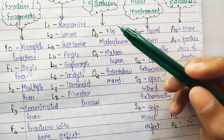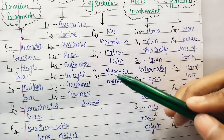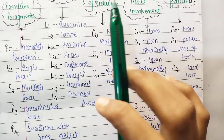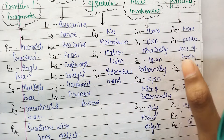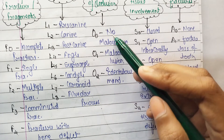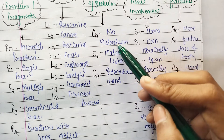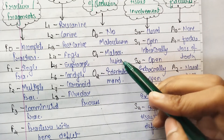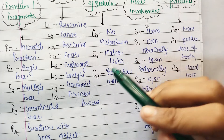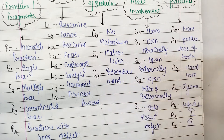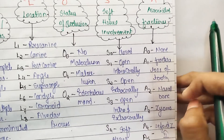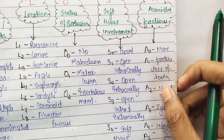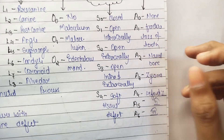O stands for occlusion, and it ranges from O0 to O2. O0 means occlusion is not disturbed, O1 means occlusion is disturbed, and O2 means the patient is edentulous.